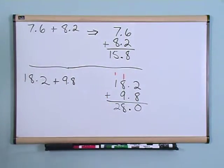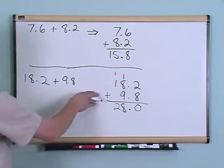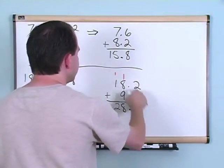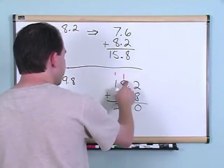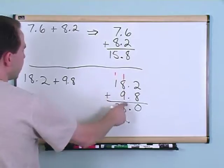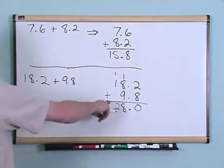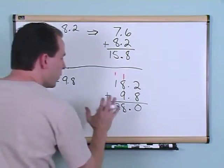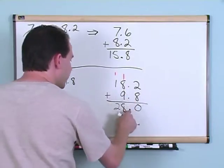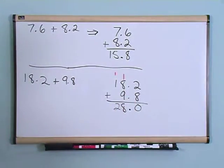This literally is exactly the same methodology, exactly the same steps as in the previous section when we started adding numbers. Start in the right column, carry as you need to. Here we had 1 plus 8 plus 9 gave us 18, we had to carry a 1, then we write our final number down. When we're done, we take the decimal and pop it down there. So 28.0 is the answer.